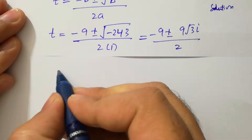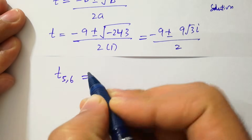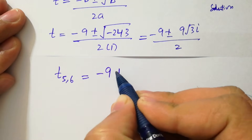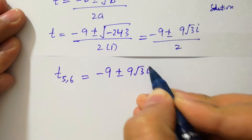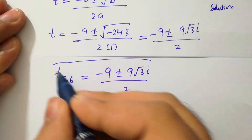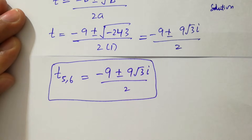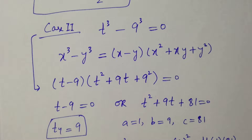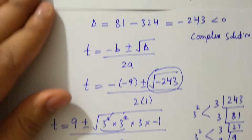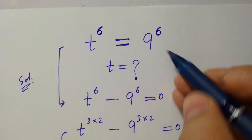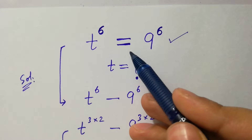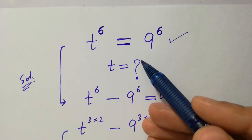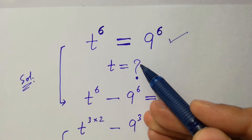So we have all 6 solutions: t₁ = −9, t₂ and t₃ = (9 ± 9√3 i) / 2, t₄ = 9, and t₅ and t₆ = (−9 ± 9√3 i) / 2. This confirms that a 6th degree equation gives 6 different solutions. Thanks for watching this video. Please subscribe to the channel to get notifications of new videos.